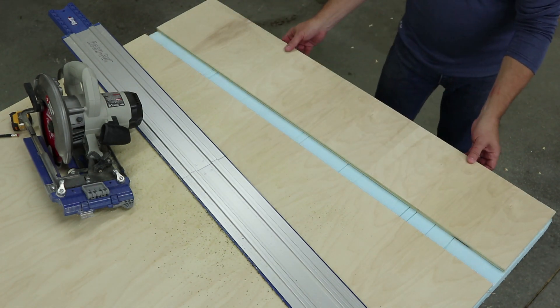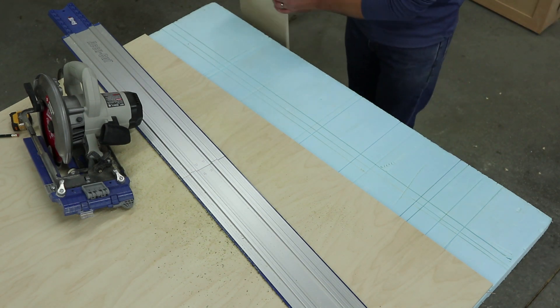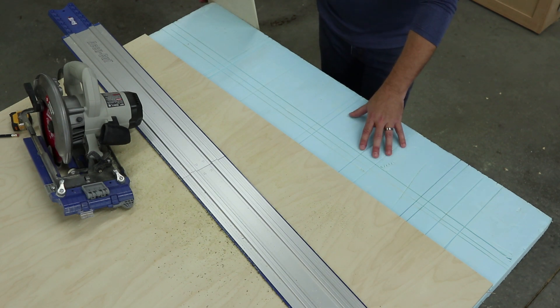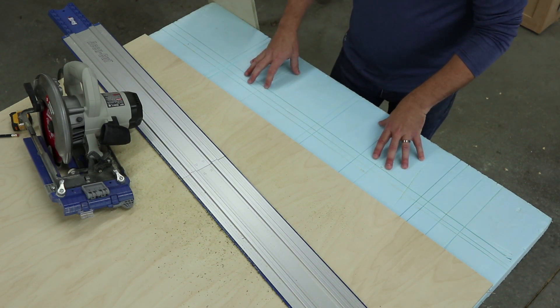You'll notice that the cutoff piece didn't fall or move after it was cut. That's because we recommend cutting sheets on two-inch thick rigid foam insulation. It supports the whole sheet and makes cutting plywood a lot easier and safer.